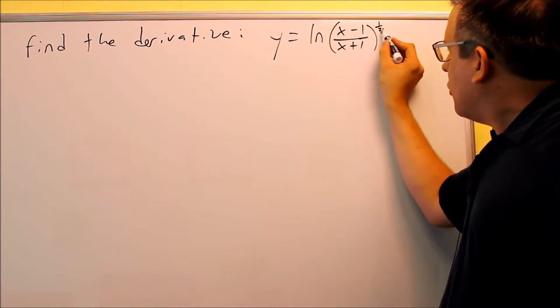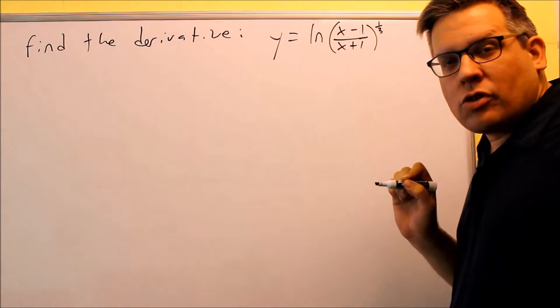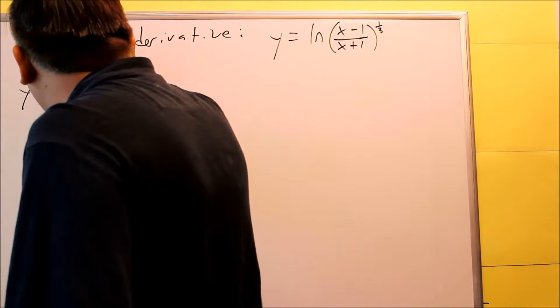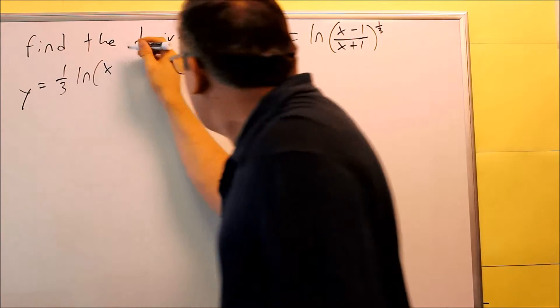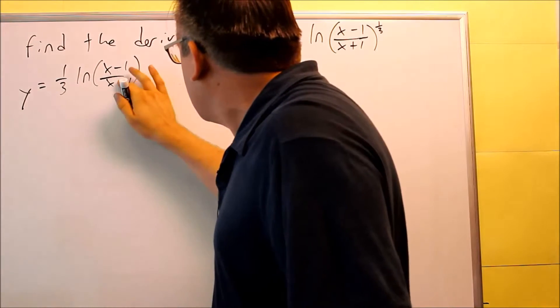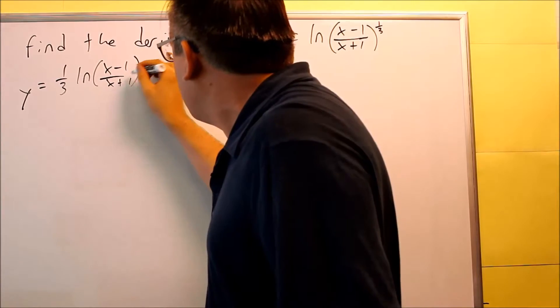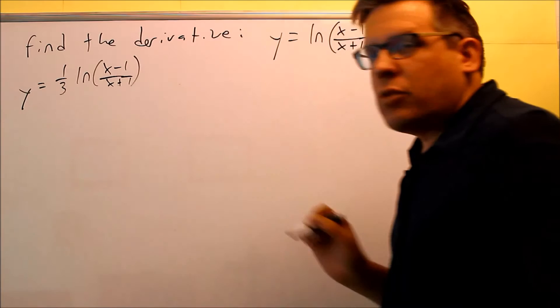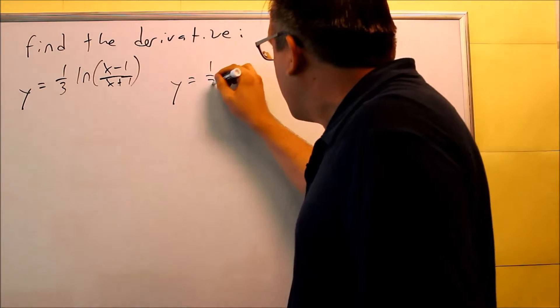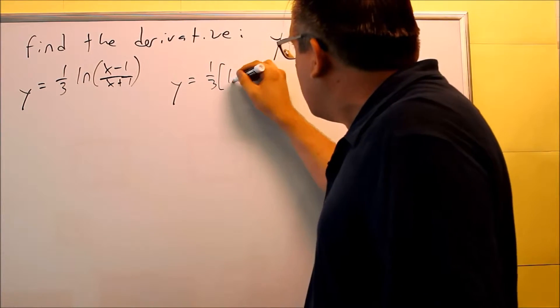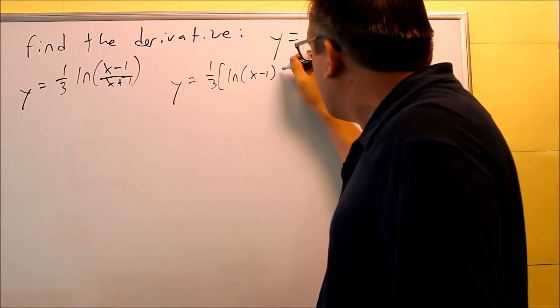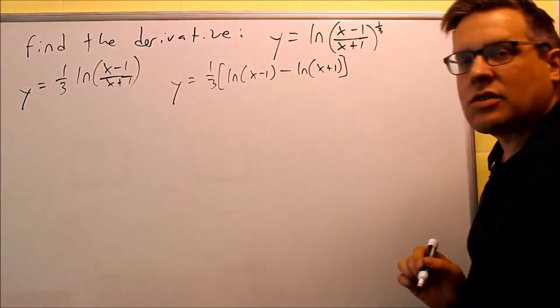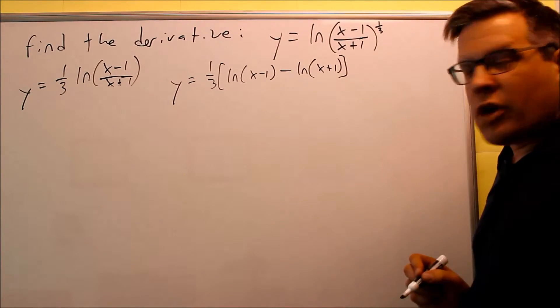So first thing I'm going to do is I'm going to move the 1/3 down in front. There's a log property that tells us we can do that. We'll move it down front, so we get 1/3 natural log of (x minus 1)/(x plus 1). So that's the first step that we want to do. Next, what we want to do here is we can break this up one more time. So I can do 1/3 on the outside, and I can do natural log of (x minus 1) minus natural log of (x plus 1). Okay, so we're doing that step. Division turns into subtraction.